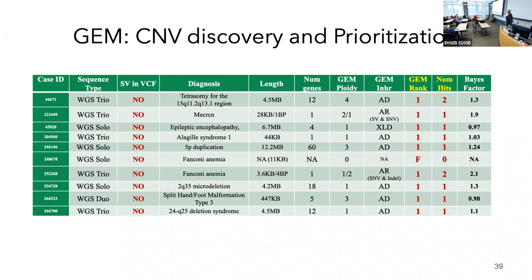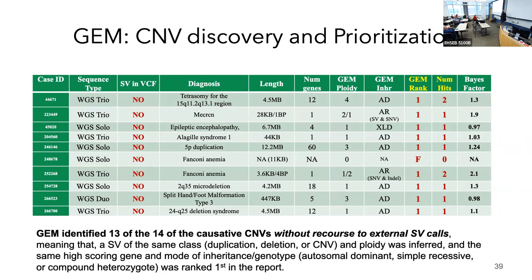This led to the obvious experiment of removing all external CNV calls from all 14 cases. In all but one case, GEM precisely recapitulated the CNV calls without any access to the BAM. The one miss was a very small deletion containing no gnomAD variants within the region — so there was no information in the VCF to detect it. Short CNVs cannot be detected without a BAM. But this may not be a major problem, as there appears to be a strong bias toward longer CNVs causing disease in the NICU.